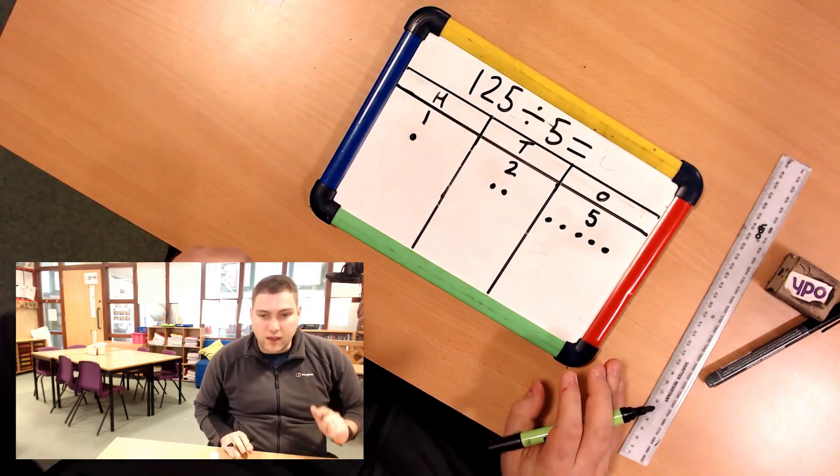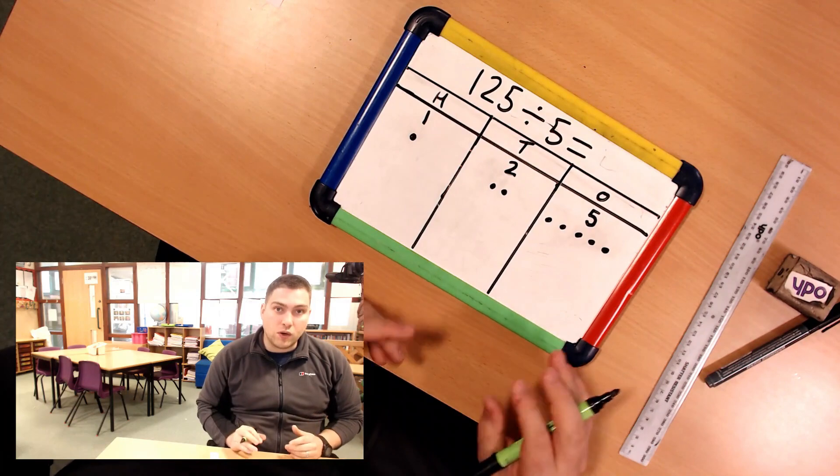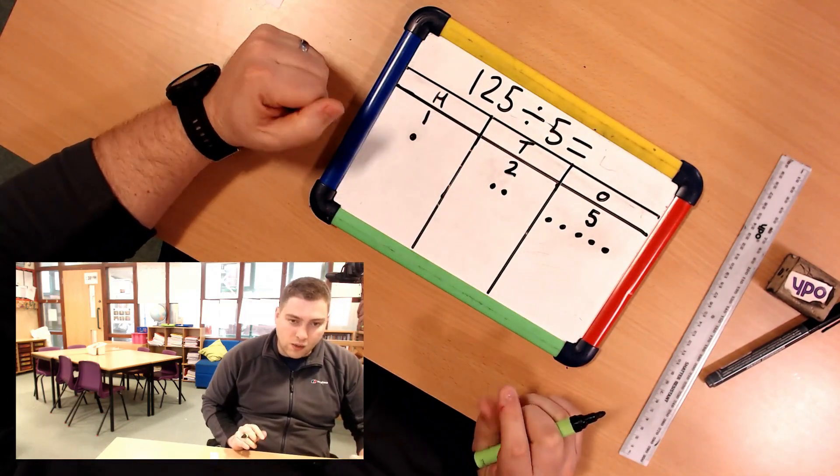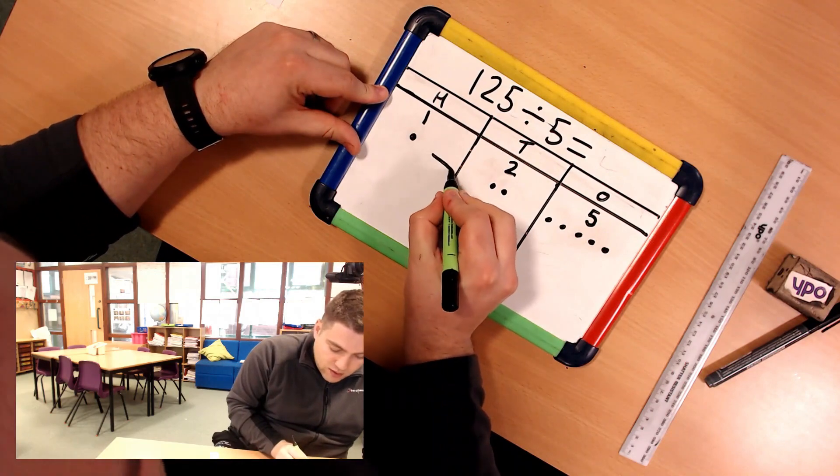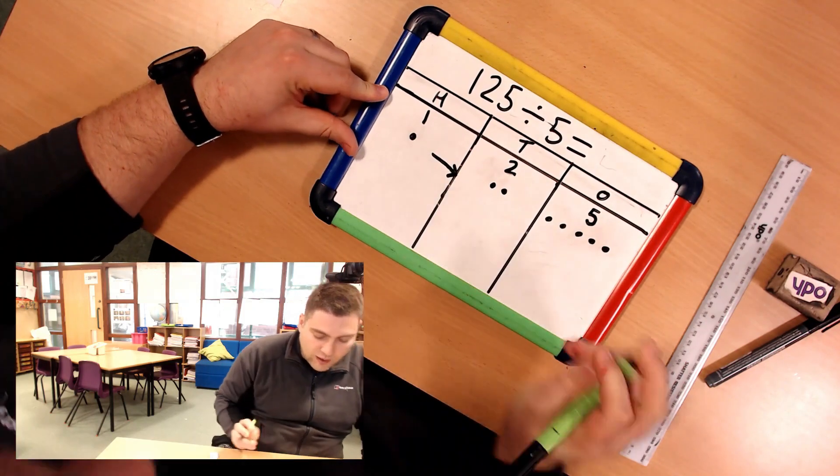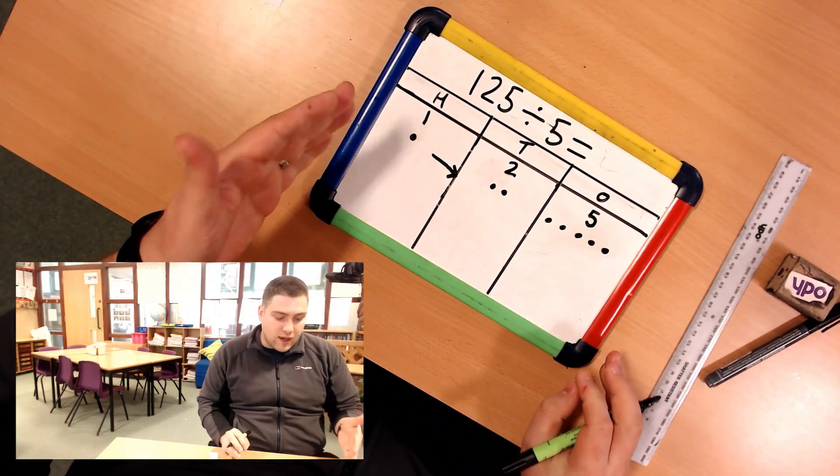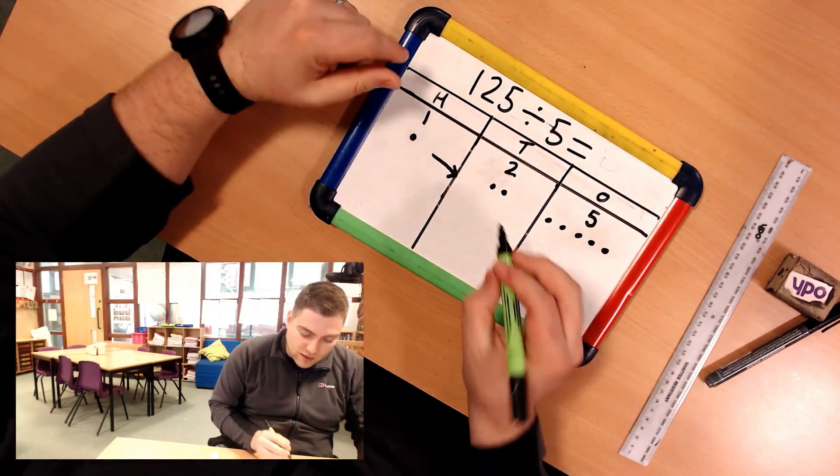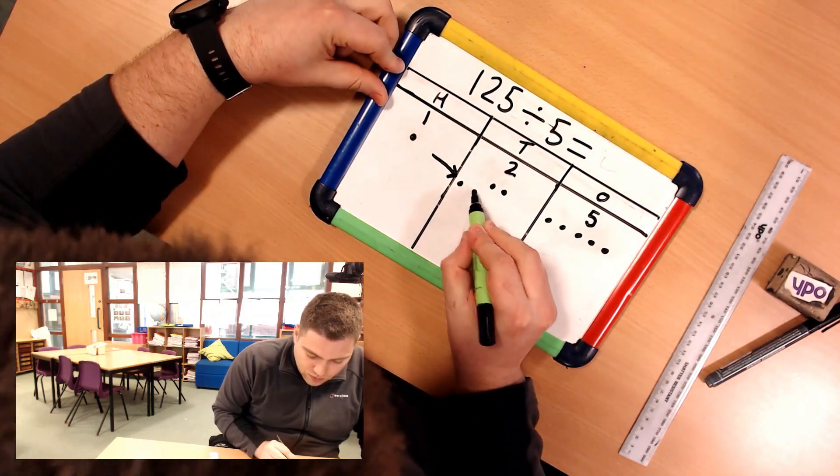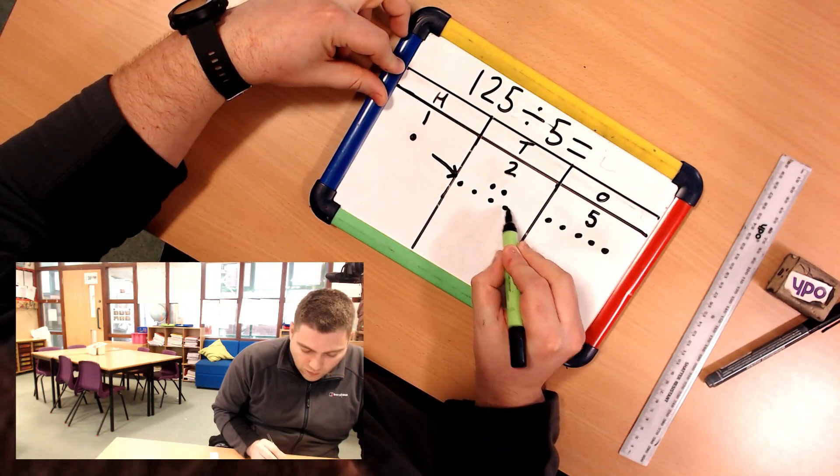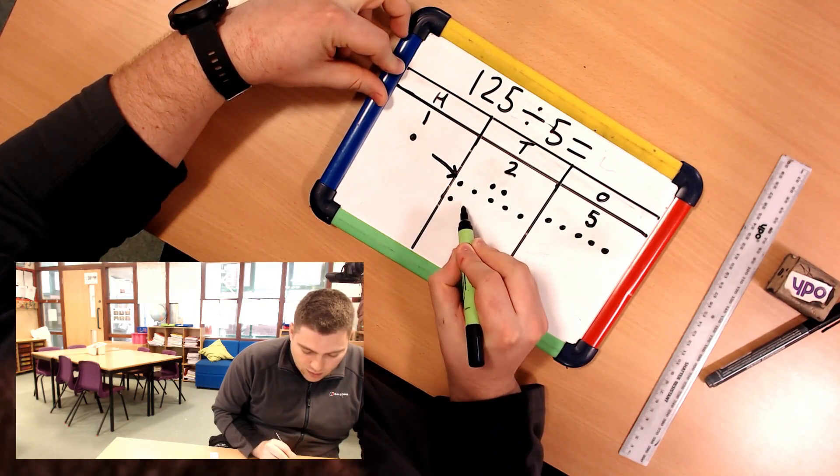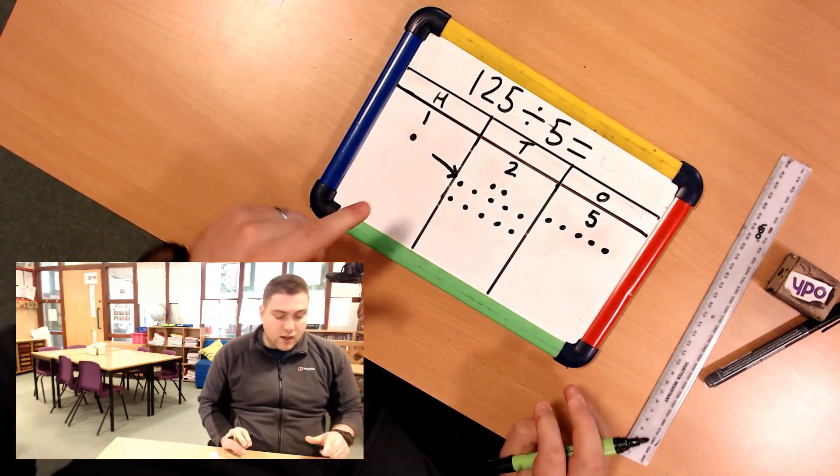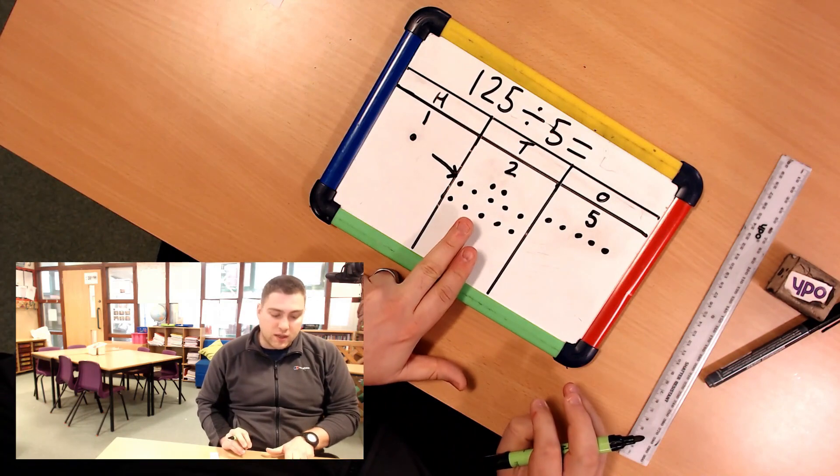Okay, my divisor is 5 so that means I need to make equal groups of 5. If I look at my 100s I've only got 1, I can't make equal groups of 5 so I need to exchange that into 10s. And 100 is the same as 10 10s. So I'm going to add in 1, 2, 3, 4, 5, 6, 7, 8, 9, 10. So now I've got my 100 represented as 10 10s.